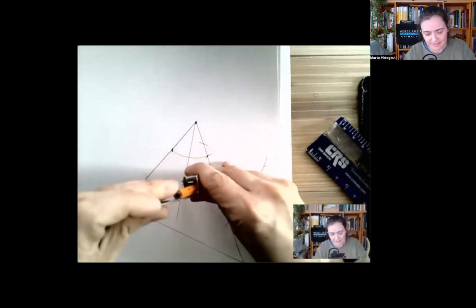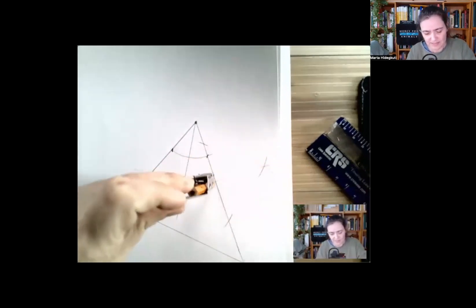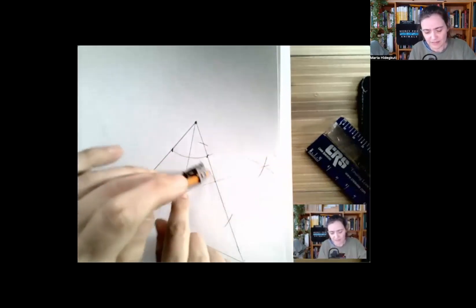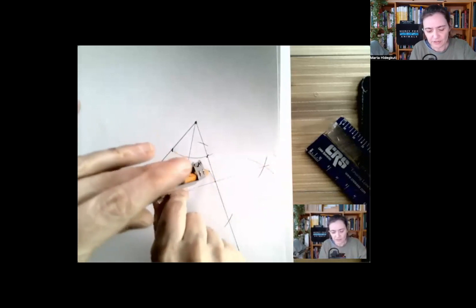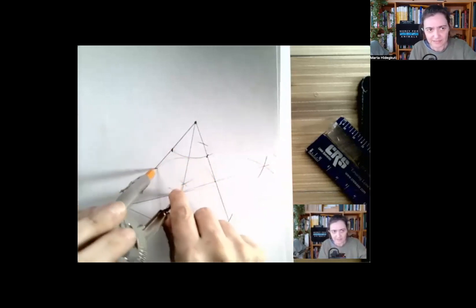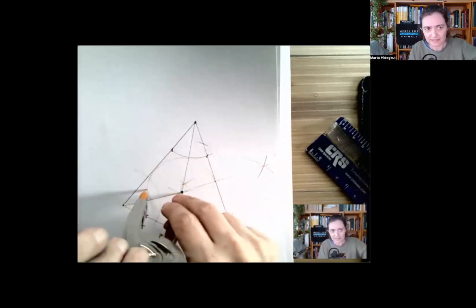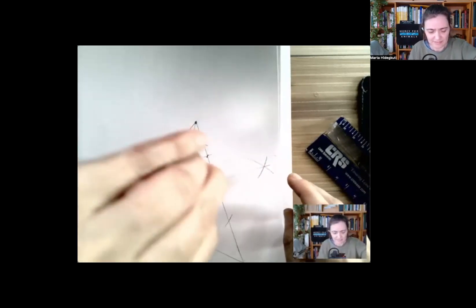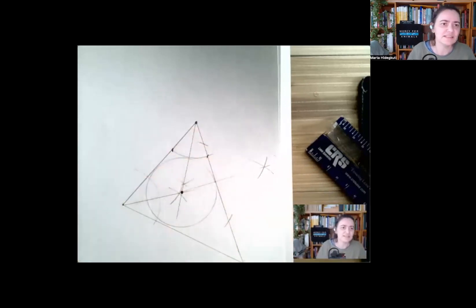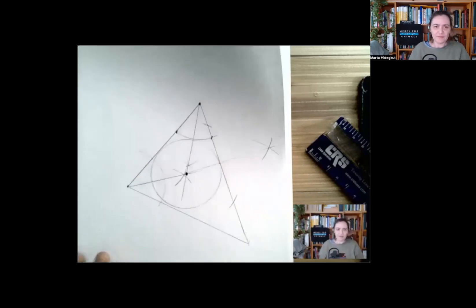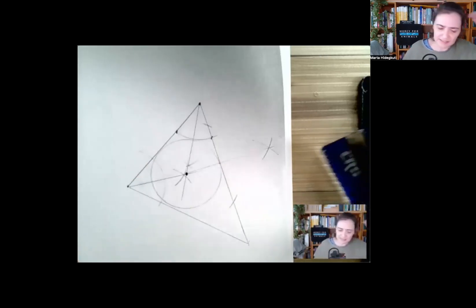This is where it gets tested — how precise we were. It should be a tangent to the other two sides too. Not that accurate here — it's missing slightly — but that's how the construction goes. Now let me show you a really cool interactive website.